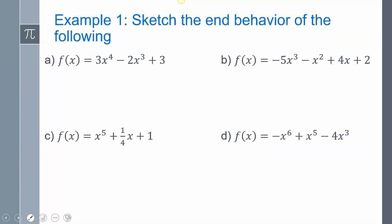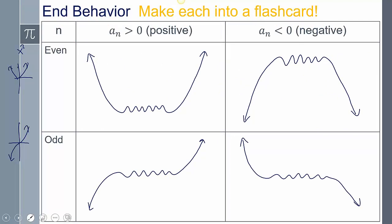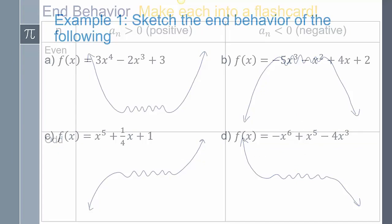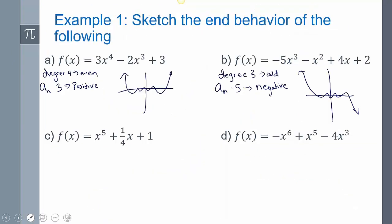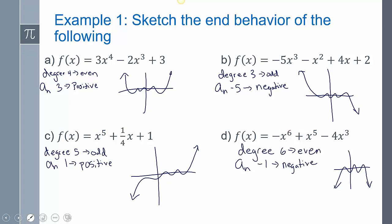I can easily sketch the end behavior of the following just by looking at these. I look at this and say: here's my leading term — positive, even — so it's going to look like a parabola opening up. For the next one: negative, odd — so my degree is odd and my leading term is negative — that gives this shape. Then positive, odd — it looks like that — and then negative, even — so it's going to look like that.